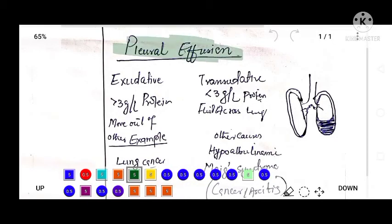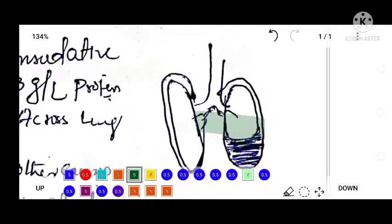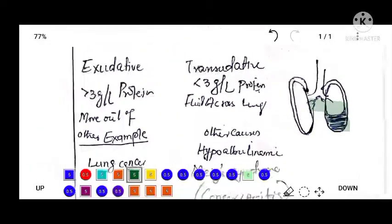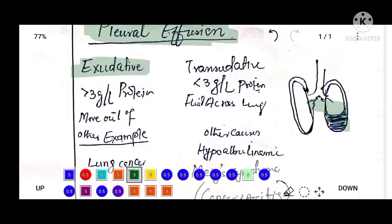Okay, so now we will be looking at pleural effusion. Pleural effusion is a condition in which accumulation of fluid in the pleural cavity occurs. There are two types of pleural effusion: one is exudative and another is transudative pleural effusion.